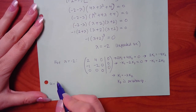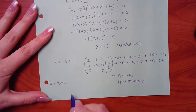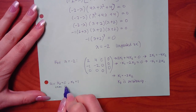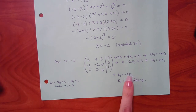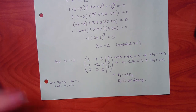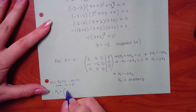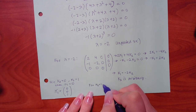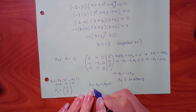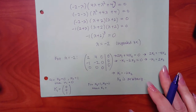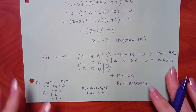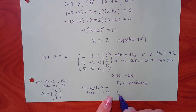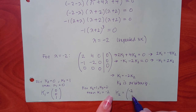First eigenvector: let k2 equal 0, k3 equal 1. Then k1 equals negative 2 times 0, which is 0. So the first eigenvector is K = [0, 0, 1]. Second eigenvector: let k2 equal 1, k3 equal 0. Then k1 equals negative 2 times 1, which is negative 2. Second eigenvector: K = [−2, 1, 0].